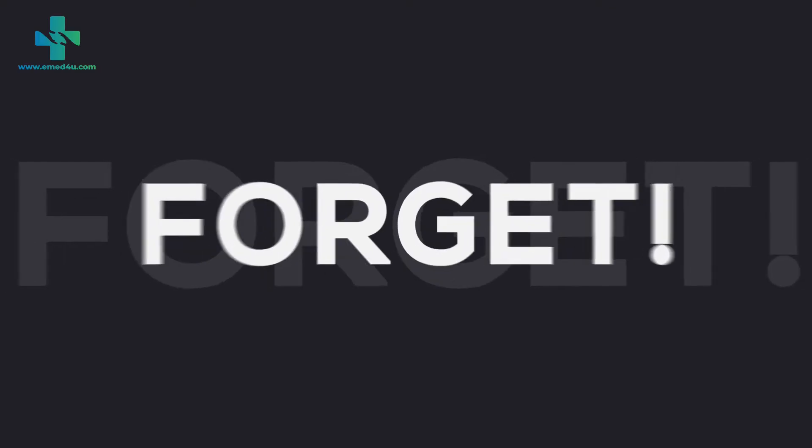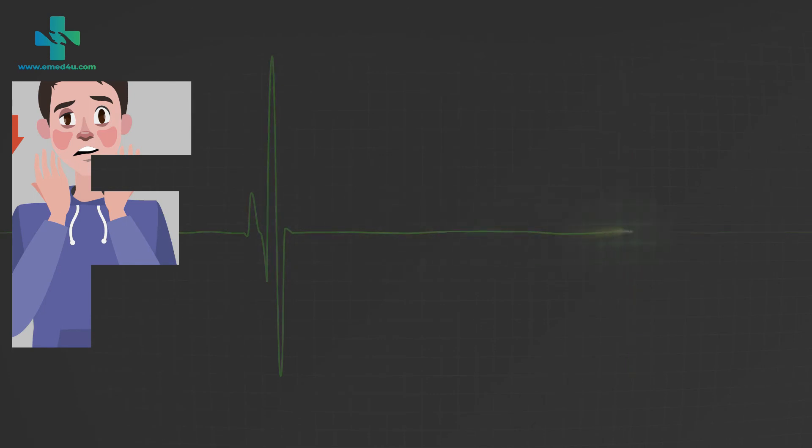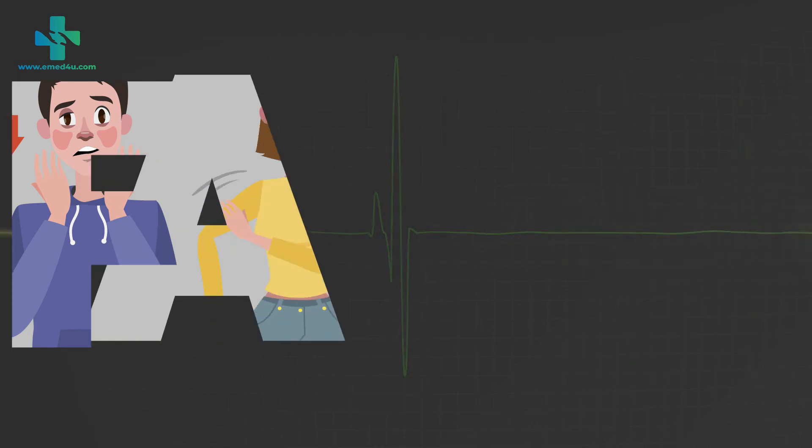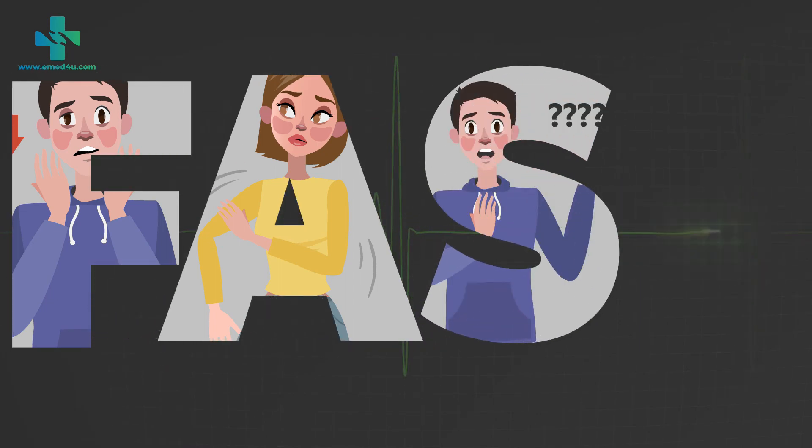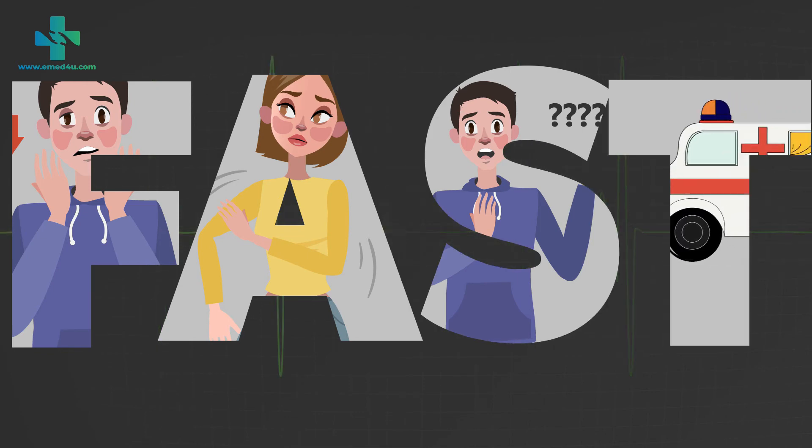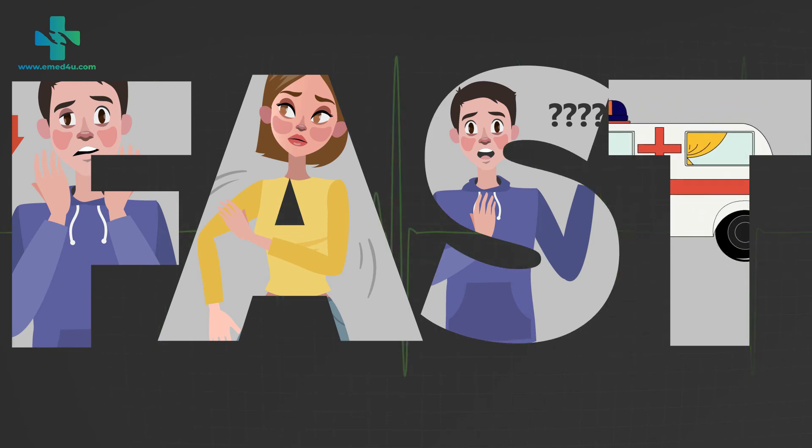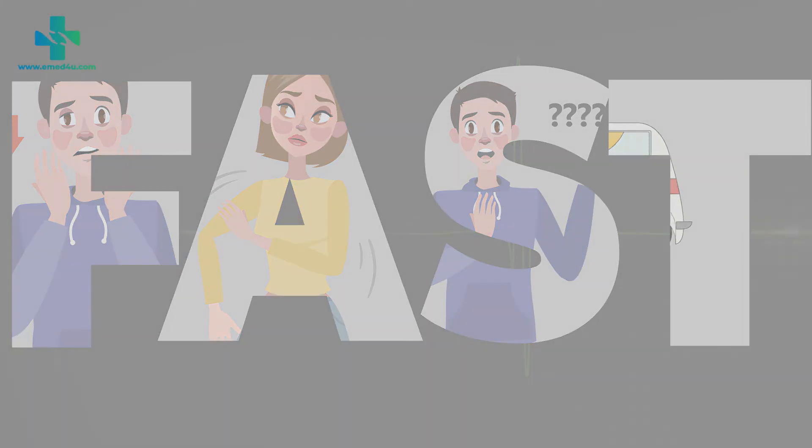Don't forget: stroke strikes fast, so should you. F stands for facial weakness or facial droop, A stands for arm or leg weakness which could be on one side or both, S stands for slurred speech, and T stands for time, which means that it is time to call an ambulance.